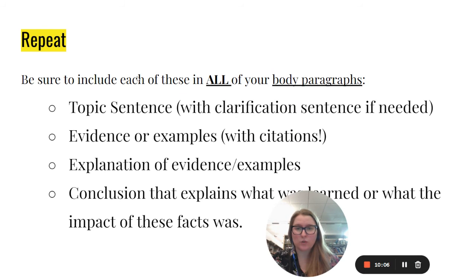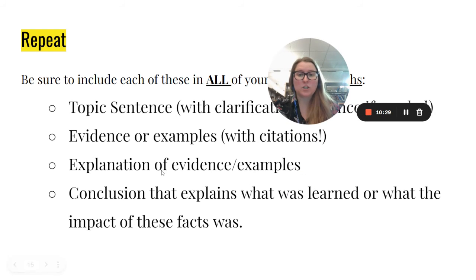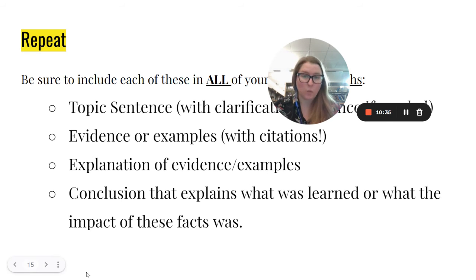You can see each of these components in all of your body paragraphs. Every single paragraph that is not your introduction or conclusion should have these four things: a topic sentence with a clarification sentence only if it's needed; evidence or examples with citations — every fact should have a citation; an explanation of the evidence and examples; and a conclusion sentence that explains what was learned or what the impact of these facts was.